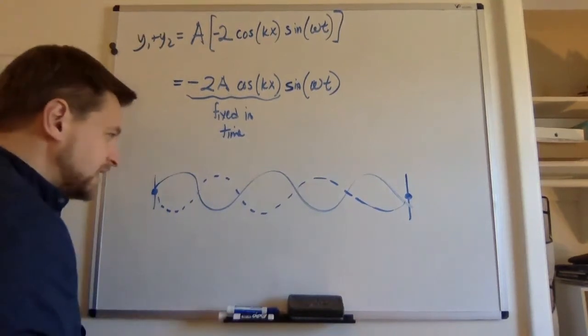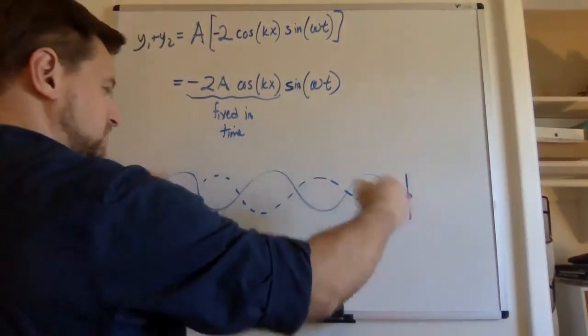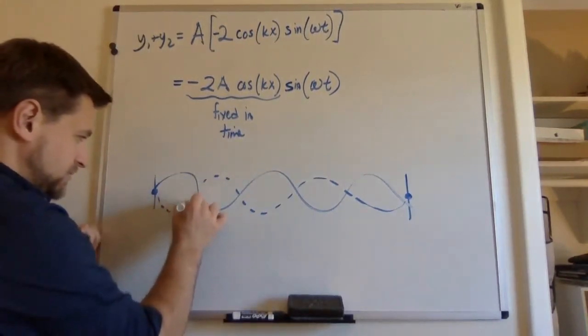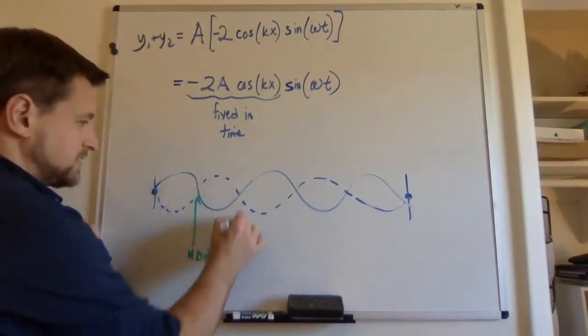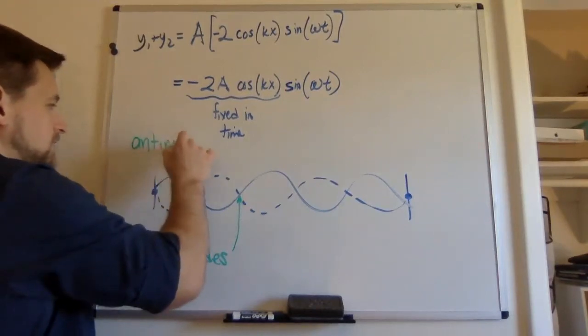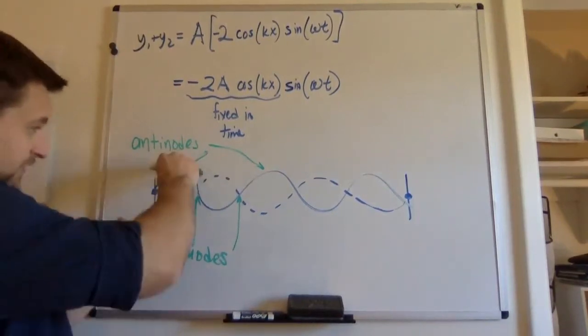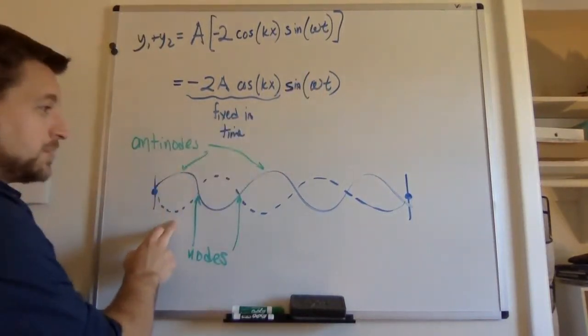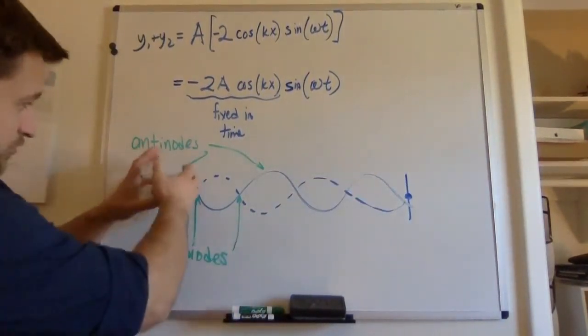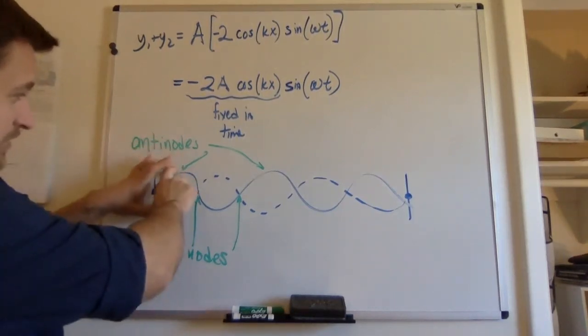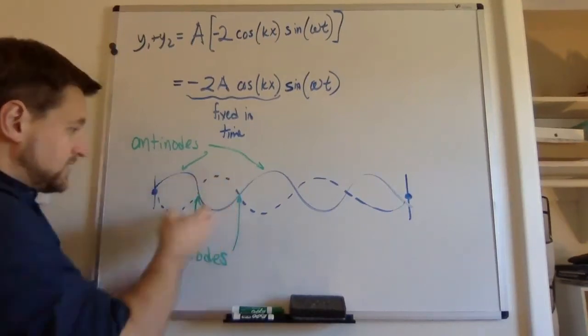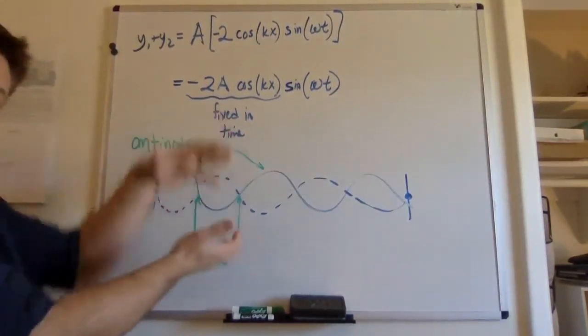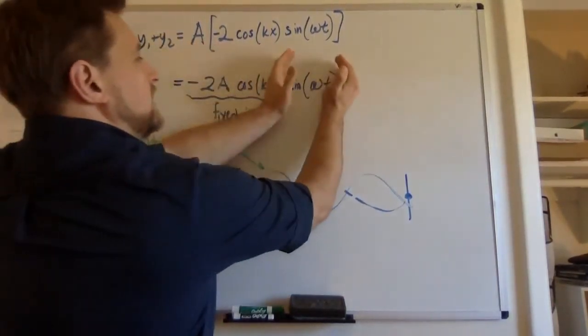And as time goes on, we actually see this string just sort of make what we call nodes, points where destructive interference happens. And antinodes, places where maximum constructive interference happens, depending whether sine has a value of one or negative one. But as we watch this thing vibrate, we see these antinodes, places where there's a large amplitude and then zero amplitude and then large amplitude. And we just see these nodes grow and shrink and grow and shrink and they don't really seem to go to the right or go to the left. They just sort of oscillate up and down because all of the spatial stuff is fixed. And we just let it oscillate in time.